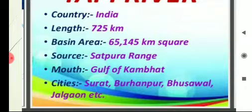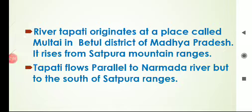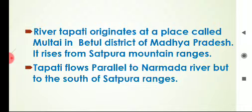The mouth of the river is the place where the flow of the river ends and it joins the sea or ocean — it is the ending part of the river. The starting part is called origin and the ending part is called the mouth. River Tapti originates at a place called Multai in Betul district of Madhya Pradesh, rising from the Satpura mountain ranges. Tapati flows parallel to Narmada river but to the south of the Satpura ranges.